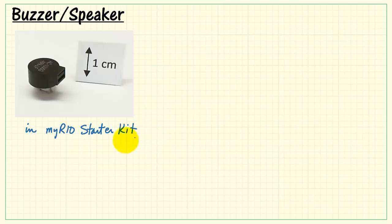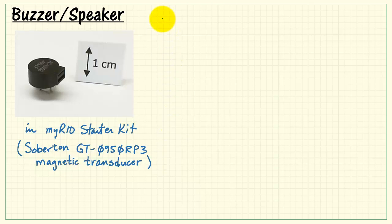Here's the buzzer speaker that's included in the MyRIO starter kit. This is a model from Soberton. It's called a magnetic transducer and you see the part number there.